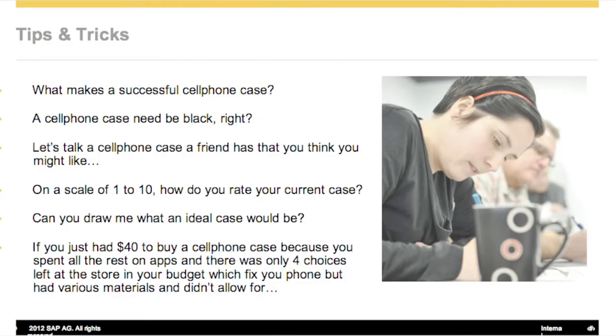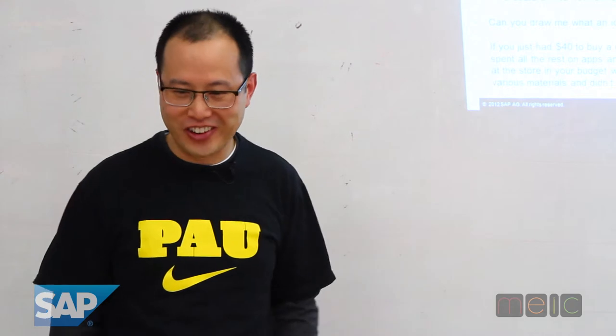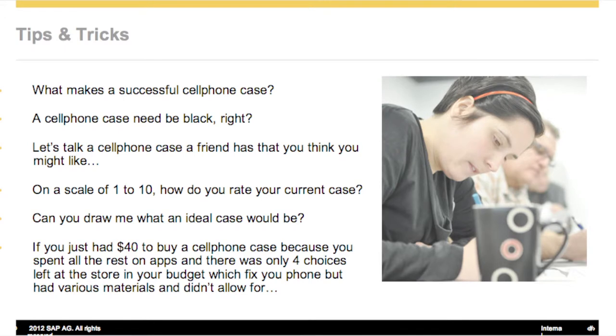We say things like that all the time. Also avoid questions about a cell phone case a friend has — that's hearsay. Much like a court, we never want second-hand information because it doesn't help us build our composite profile later. You're talking about the friend, not the interviewee. I'm mining your situation, so it shouldn't be hearsay. Similarly, 'On a scale of one to ten, how do you rate your current case?' — we don't know what a ten means. If your last case was a ten, that doesn't help me design the next one. I don't like these questions, and I'm not going for volume either.